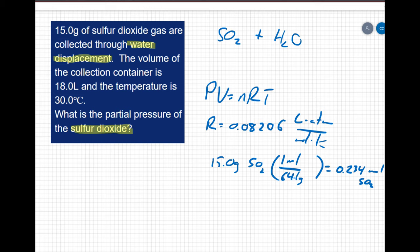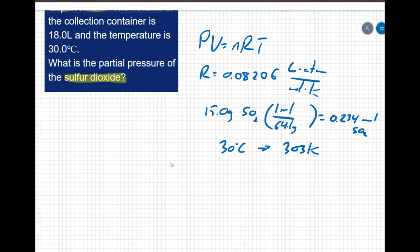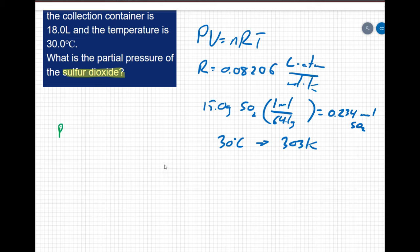So that means that I have 0.234 moles of SO2. I see that my volume is 18 liters, that's good. But I see my temperature is 30 degrees Celsius. So I'm going to want to convert that to 303 kelvin. Now everything's in the correct units, so I can plug into the ideal gas law. PV equals nRT, and I'm going to isolate pressure. So I'm going to divide both sides by volume, so I get P equals nRT over volume.